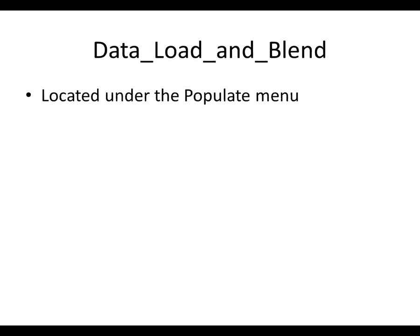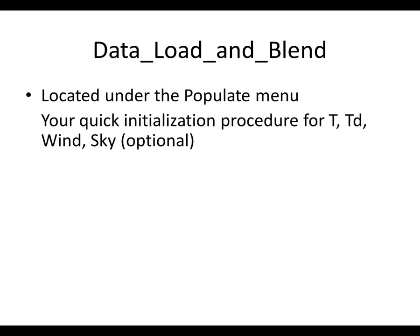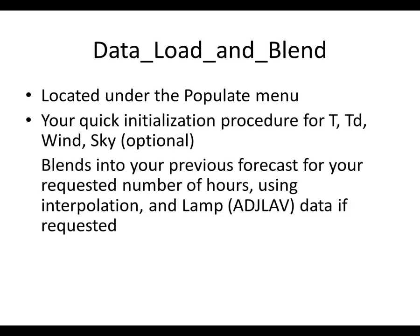The first tool is the Data Load and Blend. This is going to be probably your most frequently used tool — we're anticipating every couple hours you'll load or run this procedure to help initialize quite a bit of your forecast database. It's located under the Populate menu. It's a quick initialization procedure for temperatures, dew points, winds, and sky. There's an optional sky initialization. The procedure will blend into your previous forecast for a requested number of hours, then interpolate into your previous forecast.